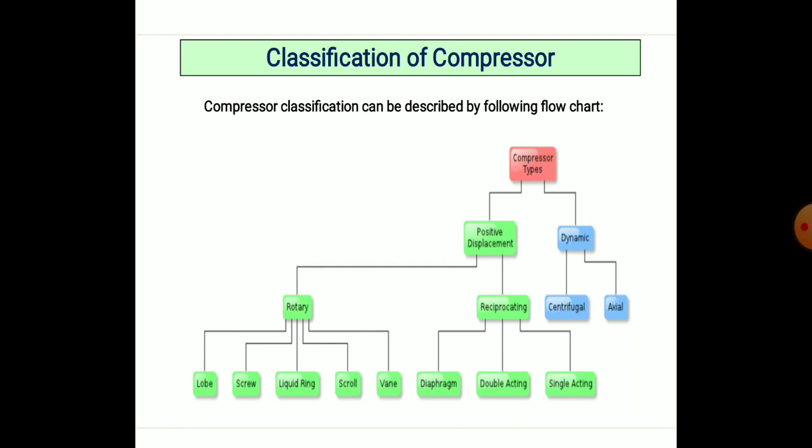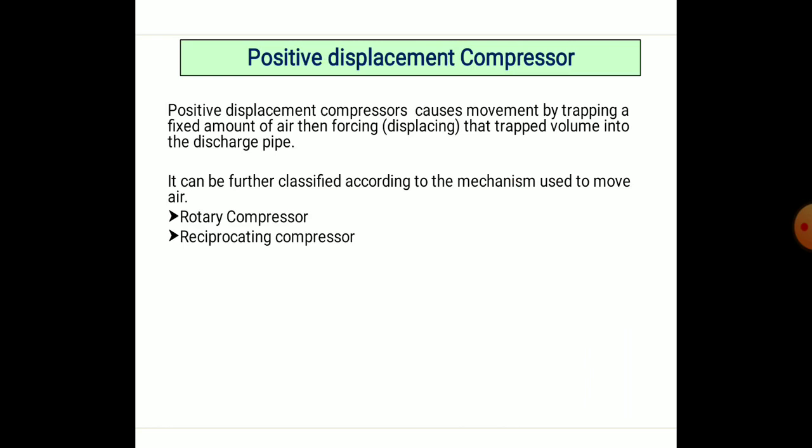We can see the types one by one: vane type, scroll type, rotary type, liquid ring, double acting, single acting, single stage, multi-stage. We will see all these types one by one along with the basic theory behind them. Now, the positive displacement compressor — the positive displacement compressor causes the trapping of a fixed amount of air.